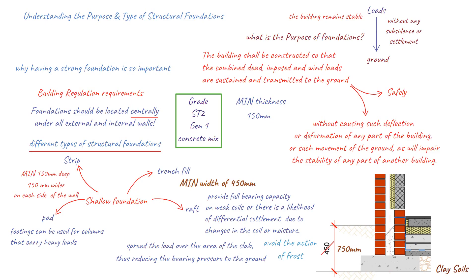Products are available which overcome the effects of heave, and can comprise a moulded hexagonal cellular polystyrene void former which is placed on the prepared ground. The reinforced concrete is poured over the product and this supports the concrete until it sets. The product is available in different grades, and each grade is designed to support a safe working load for a period of approximately 16 hours. After this time the material disintegrates, and the slab remains suspended — thus the ground beneath can rise or heave without adversely affecting the structural integrity of the slab.